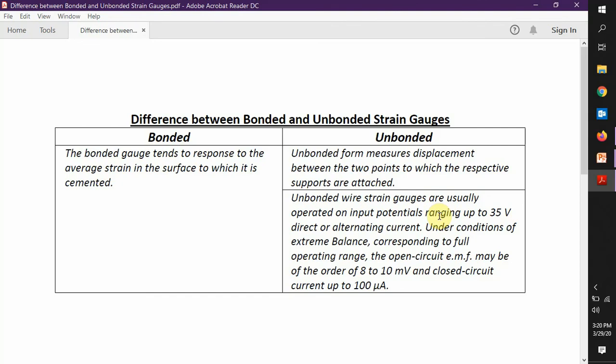Unbonded wire strain gauges are usually operated on input potential ranging up to 35 volts, direct or alternating current. Under conditions of extreme imbalance corresponding to full operating range, the open circuit EMF may be of the order of 8 to 10 millivolts and the closed circuit current up to 100 microamps.